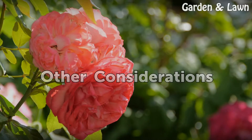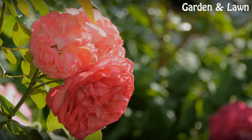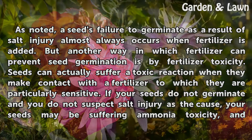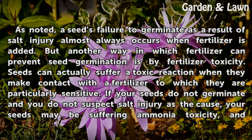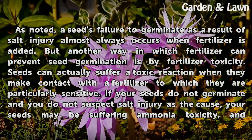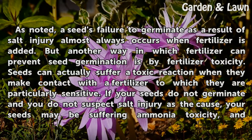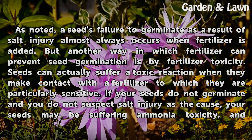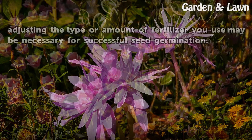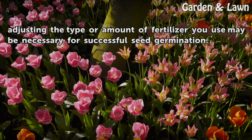A seed's failure to germinate as a result of salt injury almost always occurs when fertilizer is added. But another way in which fertilizer can prevent seed germination is by fertilizer toxicity. Seeds can actually suffer a toxic reaction when they make contact with a fertilizer to which they are particularly sensitive. If your seeds do not germinate and you do not suspect salt injury as the cause, your seeds may be suffering ammonia toxicity, and adjusting the type or amount of fertilizer you use may be necessary for successful seed germination.